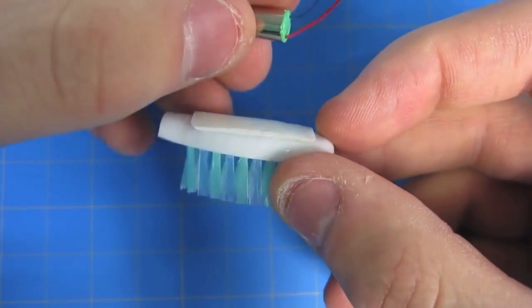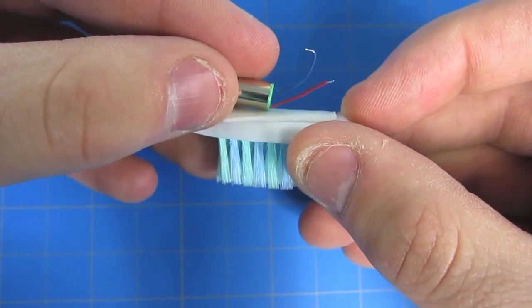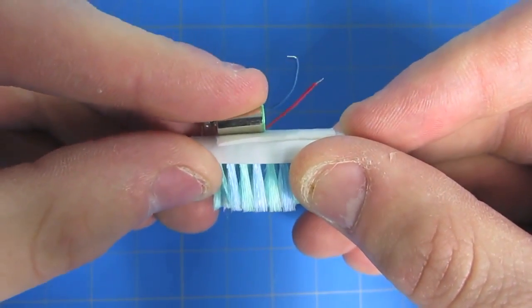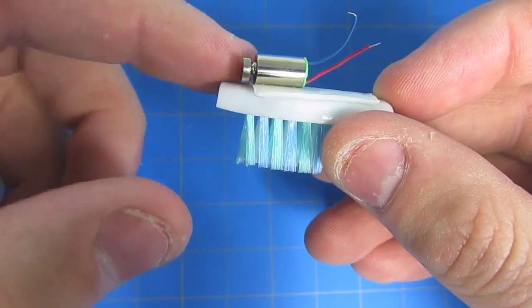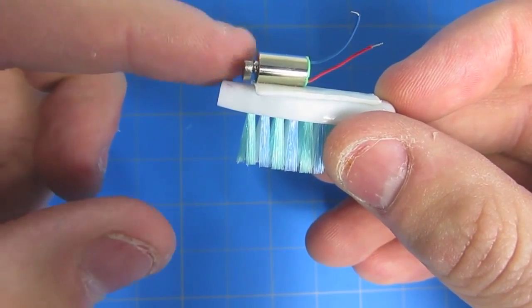Take your vibrating pager motor and put it so the rotating end is on the same side as the cut end of your toothbrush head. Make sure that the end of the vibrating motor can spin freely, otherwise this project will not work.